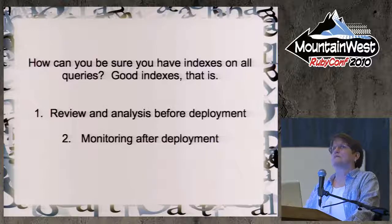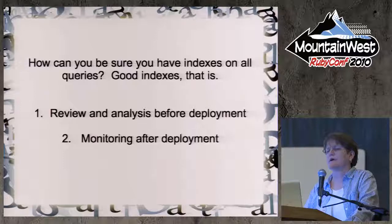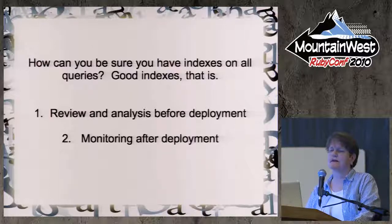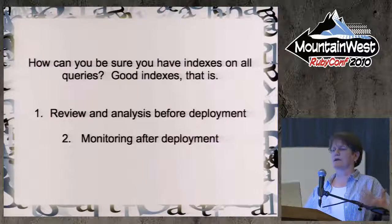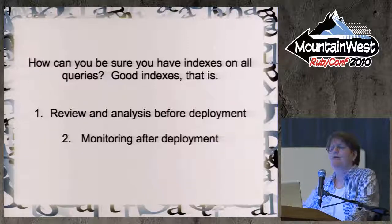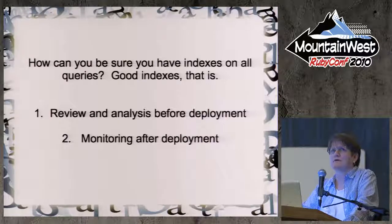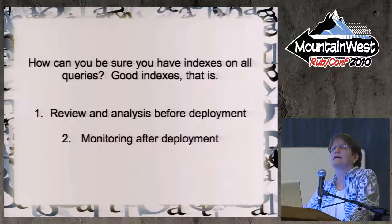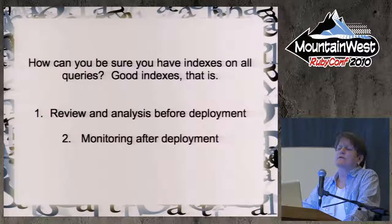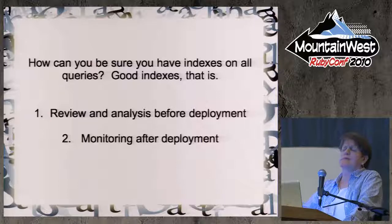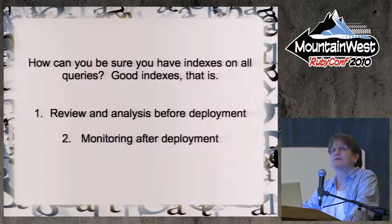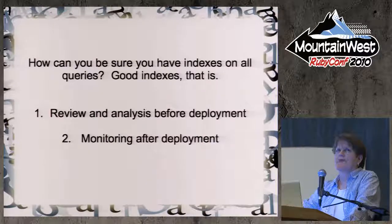We know this and we do this, but not as well as we ought to. How can you be sure that you have a good index on your query? Not just any index, but a good, efficient index. The normal way is a big review and analysis before deployment, and then monitoring after deployment — maybe formally with New Relic, or maybe when your customers call up and scream at you. That's big design up front. That's deploying untested code. Both are very bad things to agile developers like us.